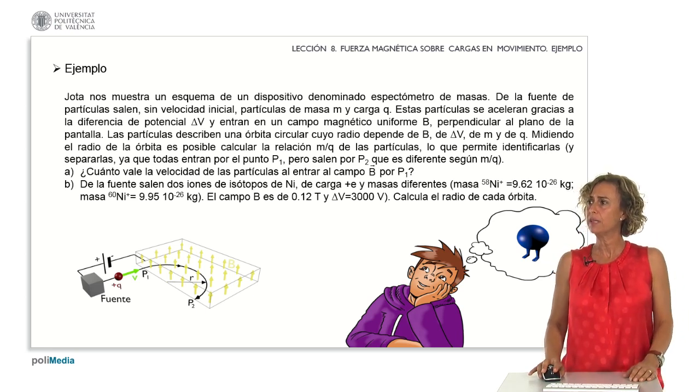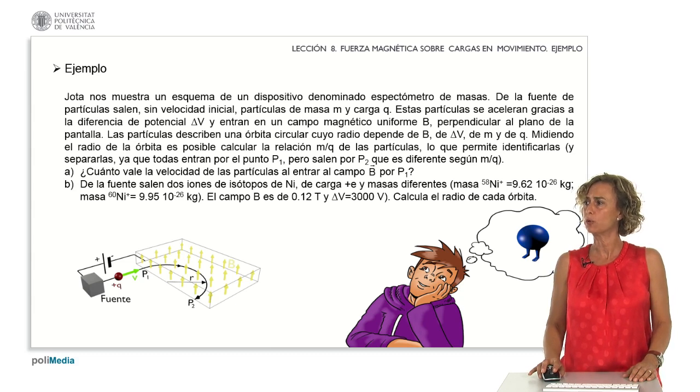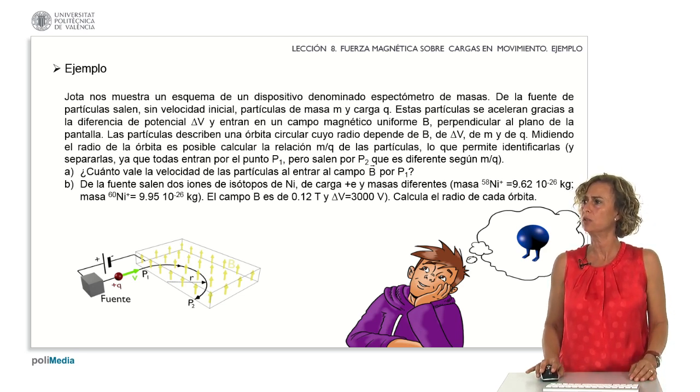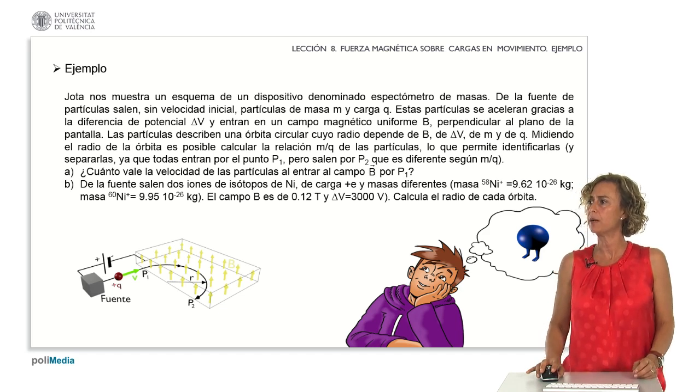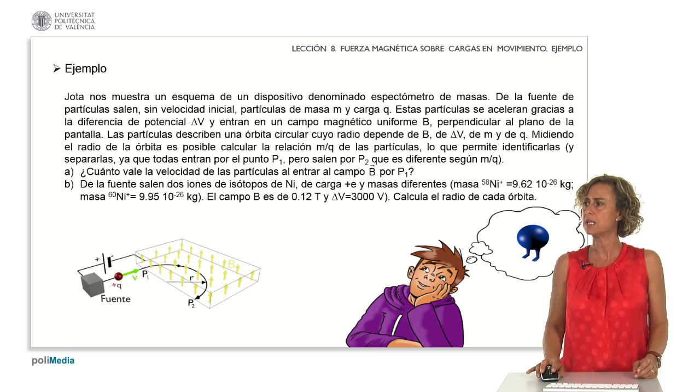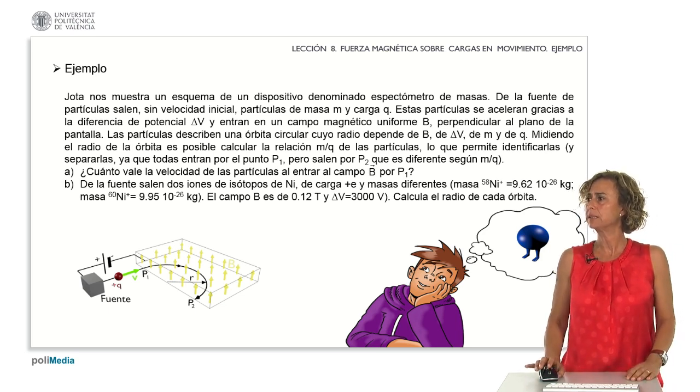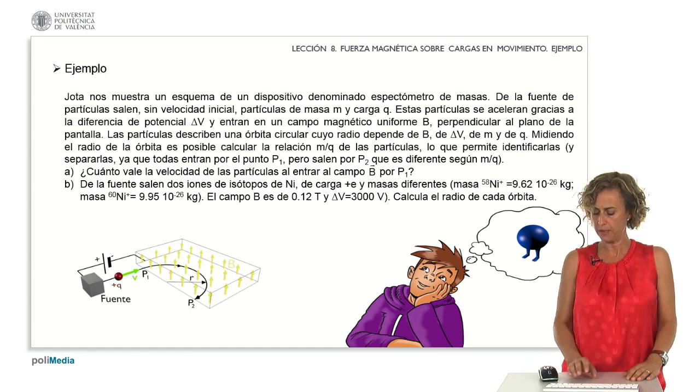Additionally, it's specified that two ions of nickel isotopes, each with a charge equivalent to that of the electron but positive and differing masses, nickel 58 and nickel 60 are emitted. The magnetic field strength is noted as 0.12 teslas, and the potential difference is 3,000 volts. The question then asks us to compute the radius of each orbit.